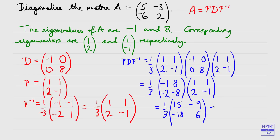Dividing everything by three, we get (5, −3; −6, 2). So we do indeed end up with our matrix A. This part is just checking that we have the right answer. So we have diagonalised A — the matrix D is the diagonal matrix — and we have shown that we can write A as the matrix P multiplied by the diagonal matrix D multiplied by the inverse of the matrix P.